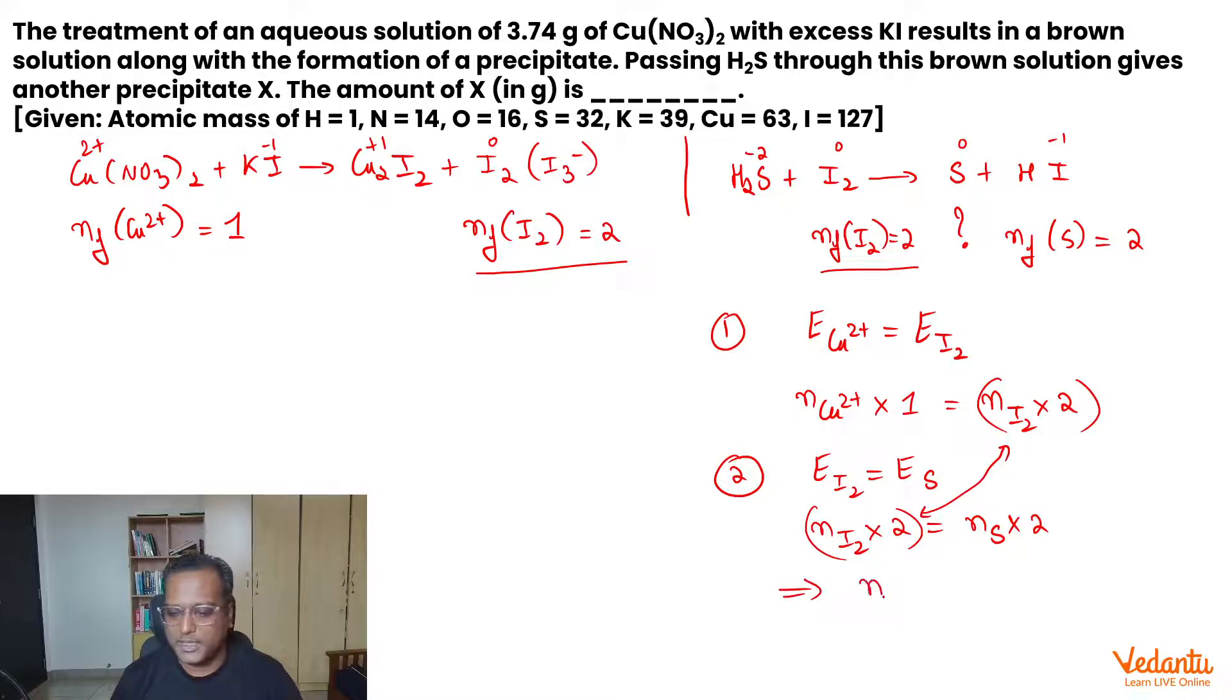Implies what? Implies number of moles of sulfur is equal to number of moles of Copper 2+ divide by 2. Number of moles of Copper 2+ can be written as number of moles of cupric nitrate divide by 2, isn't it? Again, a question solved.